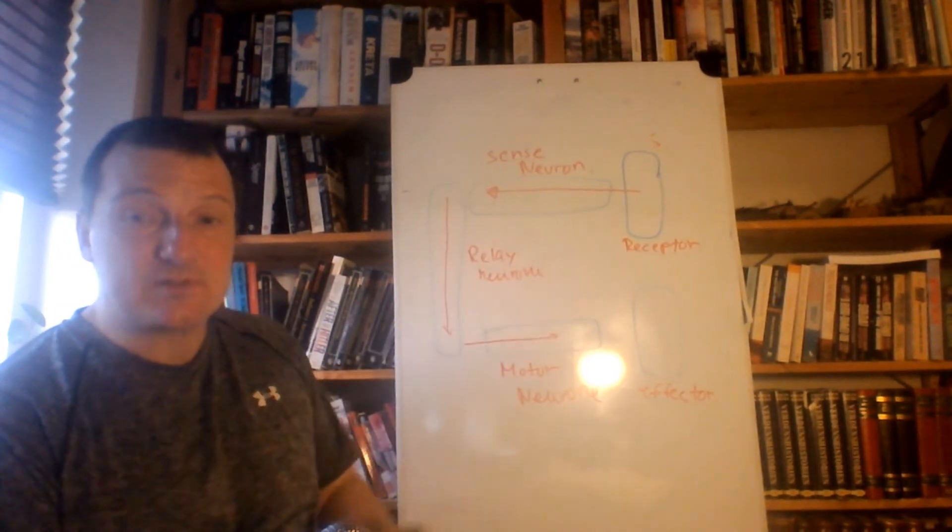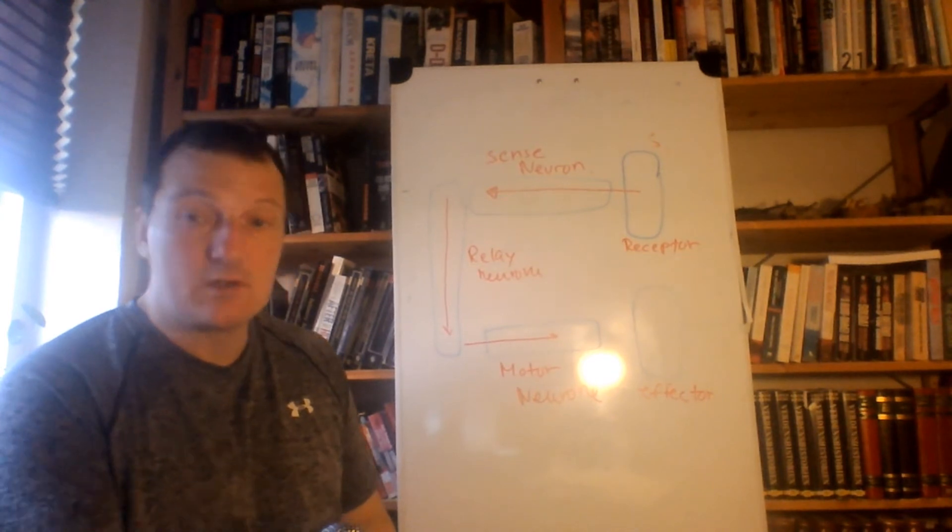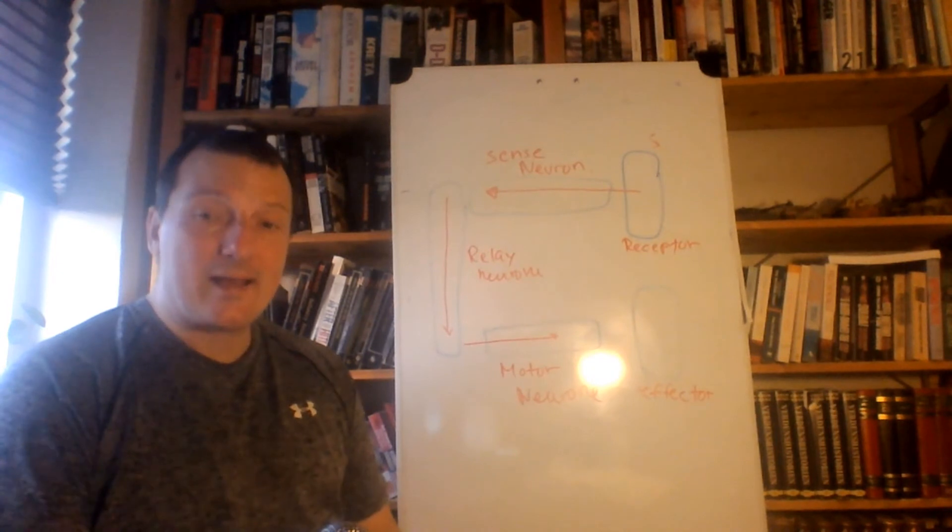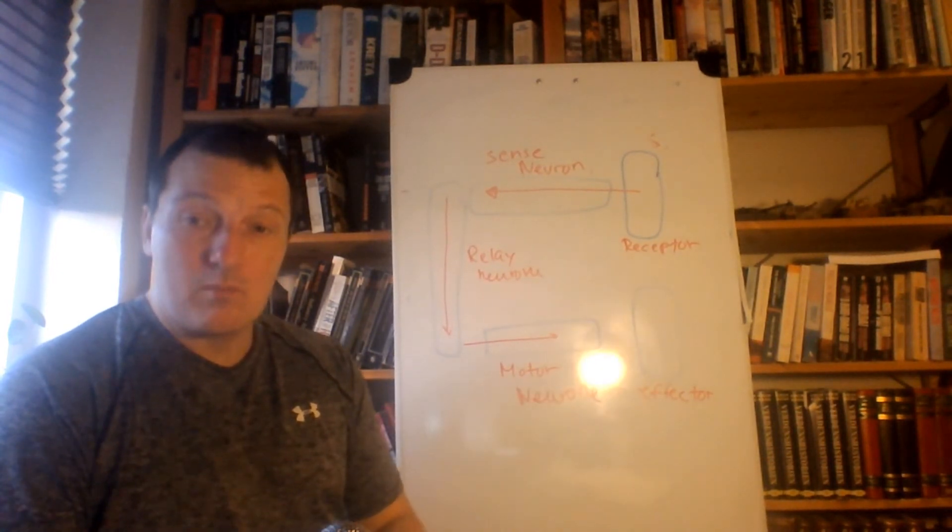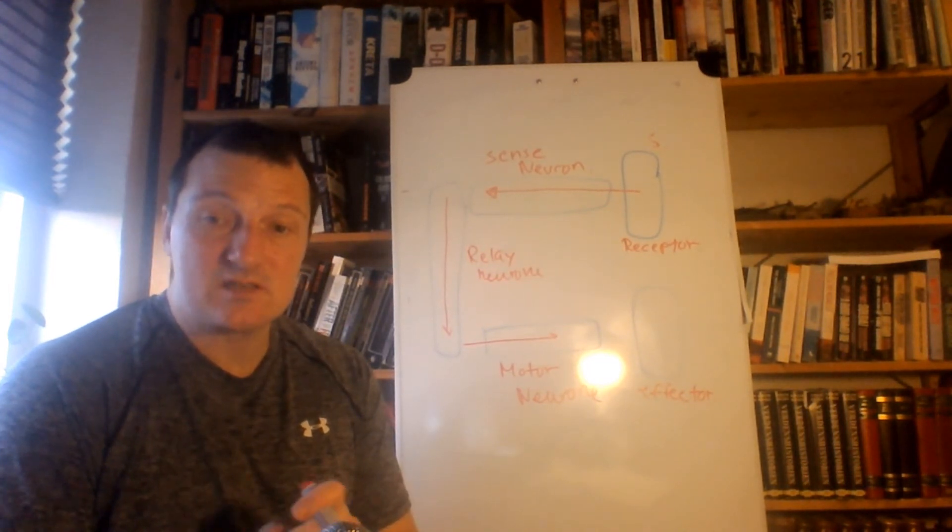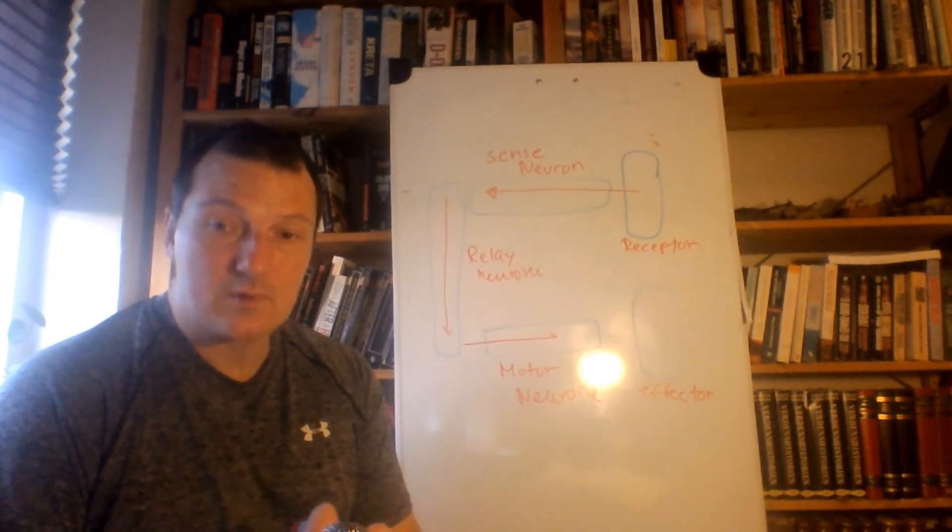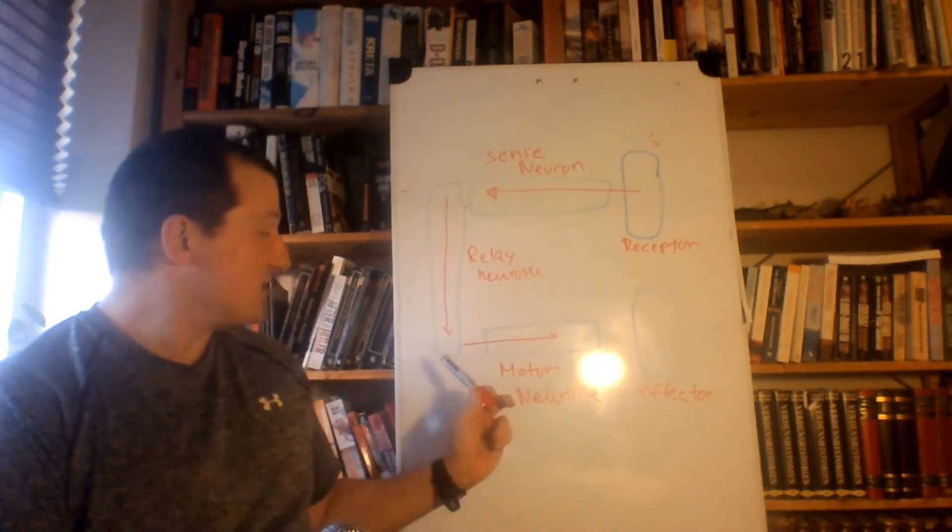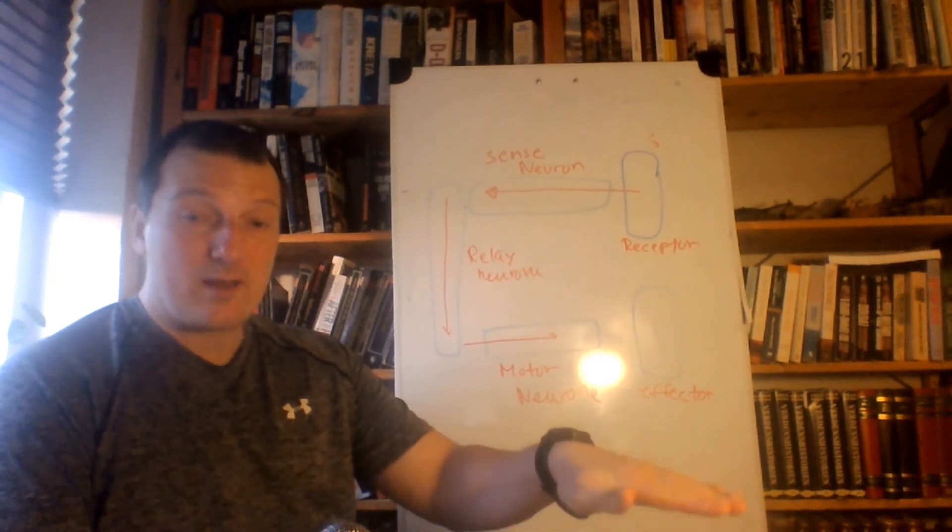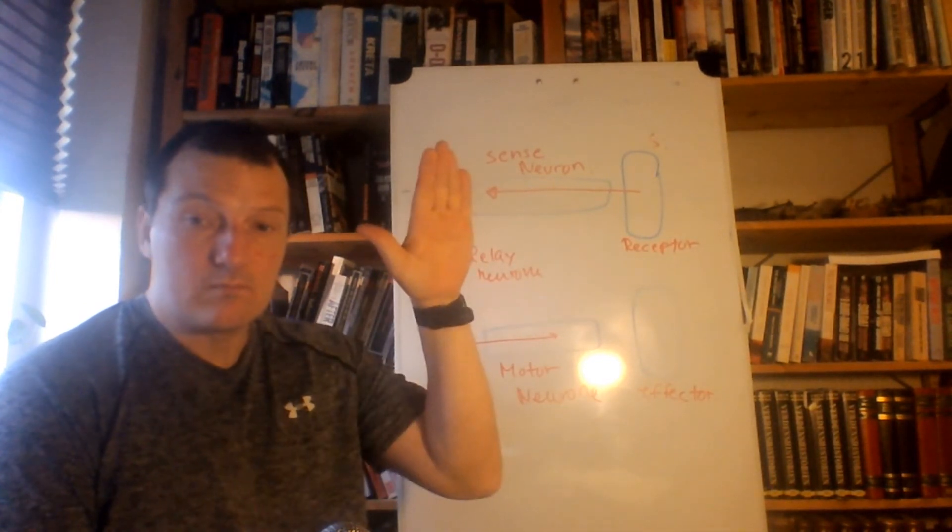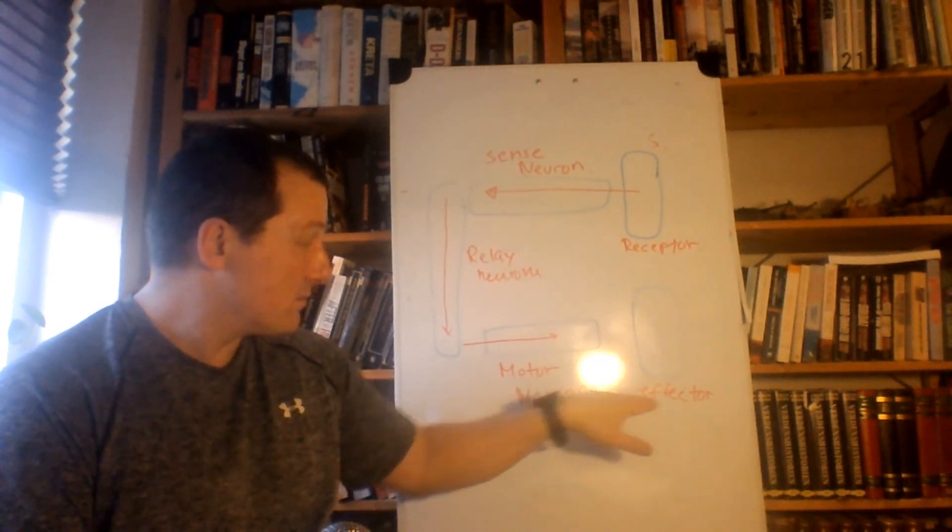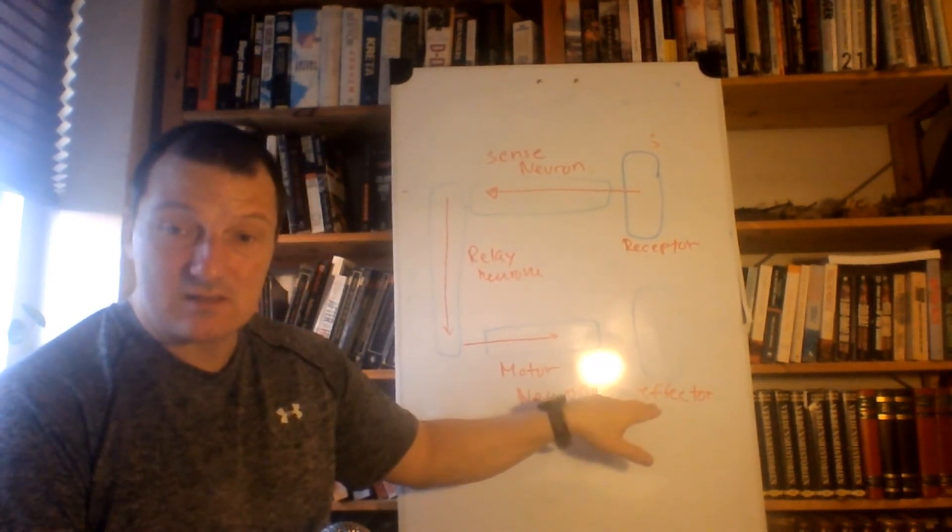That signal is then sent to a relay neuron. In the book here they just write it is one. What actually happens is the nerve signal then runs through the nerves into the central nervous system, into the brain stem, and then the brain, or in this case here just a reflex arc, decides what needs to be done. And what it does is then sends a signal to a motor neuron - in this case here your arm, your shoulder - that whatever is hurting, move.